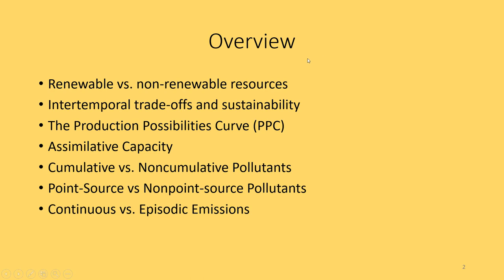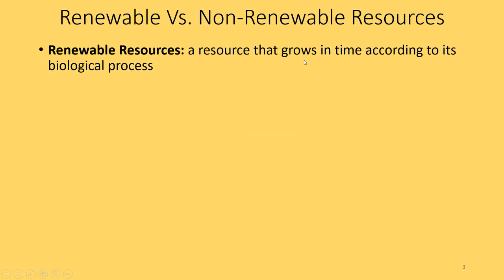A renewable resource is a resource that grows in time according to its biological process. It's a resource that can replenish itself, usually quickly enough to be considered renewable within the human lifespan or the human timescale. Many of these resources are living — things like fisheries and timber stands. You can cut down trees and have trees grow again within your lifetime. You can harvest fish and have those fish repopulate within your lifetime. But these could also be non-living sources such as the sun's energy — a renewable resource as long as the sun keeps shining.